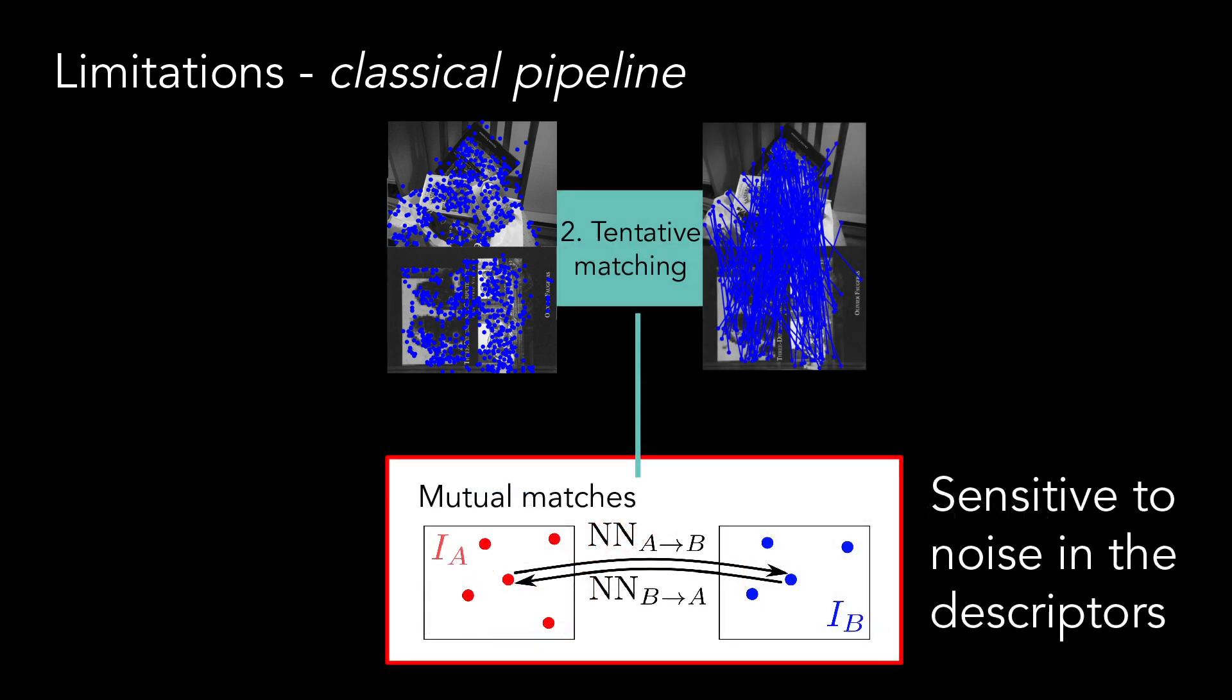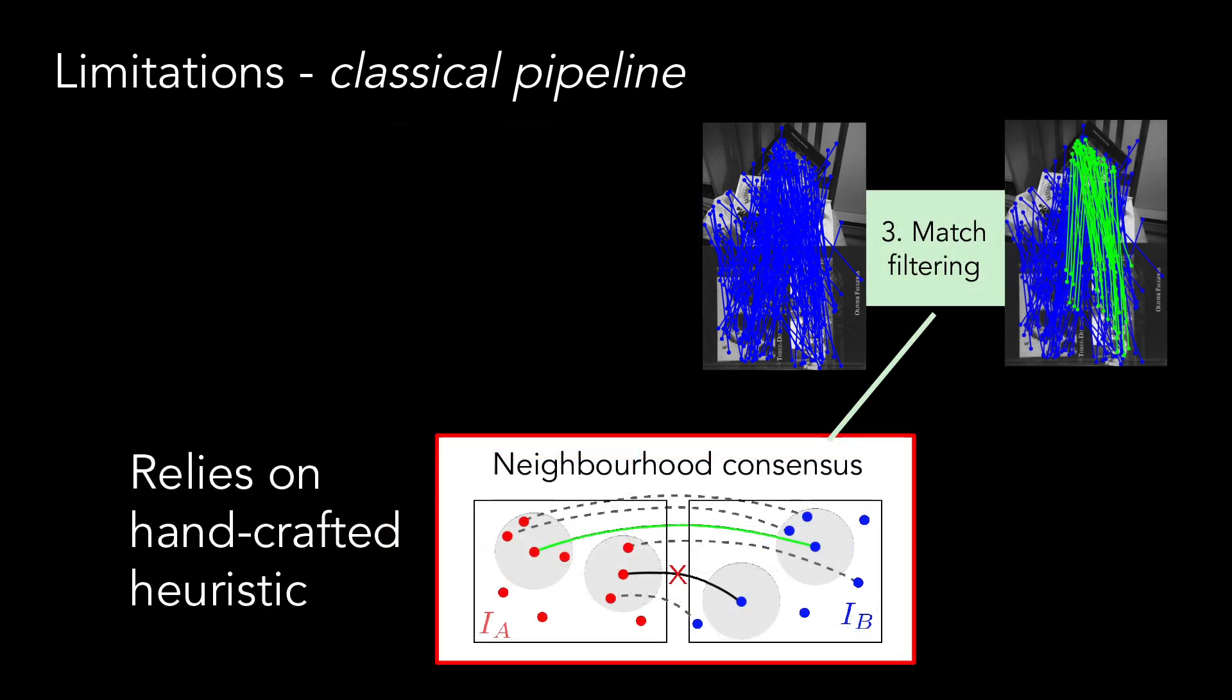The second stage is sensitive to noise in the descriptors and can therefore remove a large portion of matches. Finally, the semi-local neighborhood consensus method requires a hand-crafted heuristic, such as defining a particular size of the neighborhood to be used, as well as a threshold on the number of supporting matches.